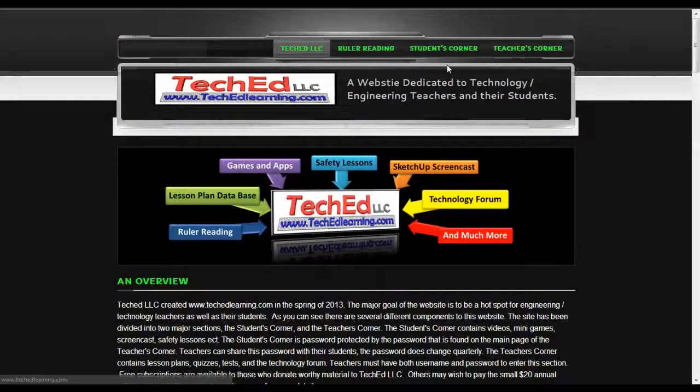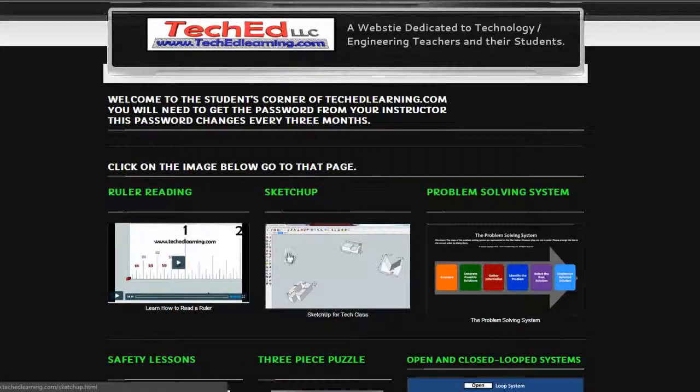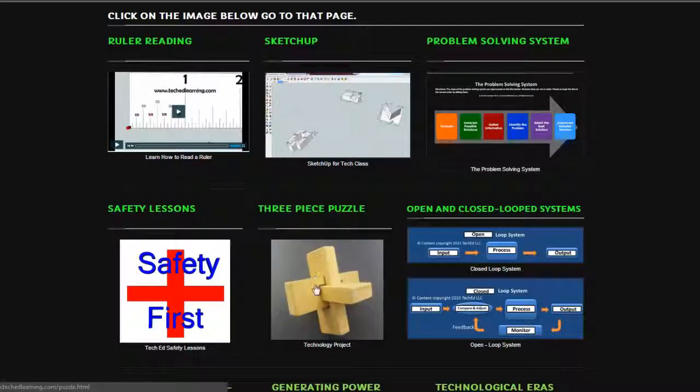What your students would first do is go to the student corner of the web page. There they'll find a bunch of different things they can click on. It would be advised that they run through a SketchUp program first. This is an introduction to SketchUp. It goes through the basics of it. Once they run through that, then they can get into the three-piece puzzle.